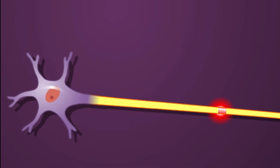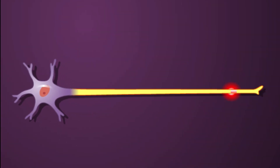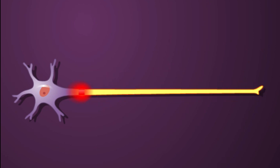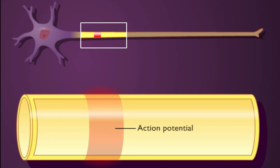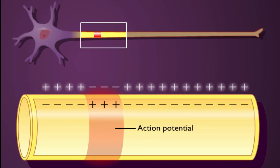An action potential, depicted as a red band, is propagated in one direction along the axon. During an action potential, the inside of the cell membrane becomes positive with respect to the outside.